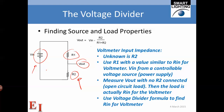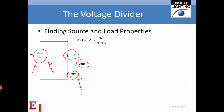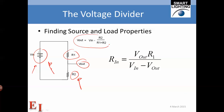Then we use the voltage divider formula to find Rin for the voltmeter. Rin equals Vout times R1 divided by (Vin minus Vout). This is just a reworked version of the voltage divider equation where R2 is now Rin, the unknown.